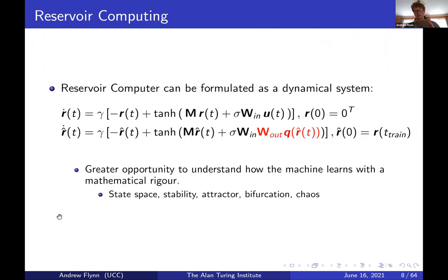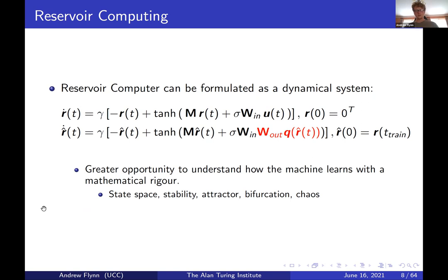The reservoir reconstructs the climate of the attractor — it follows long-term behavior with good short-term prediction and doesn't fly off to infinity. Importantly, the reservoir computer is also itself a dynamical system. That means we can use all our tools from dynamical systems theory — state space, stability, attractors, bifurcations, and chaos — to understand how learning takes place. This gives us a much greater opportunity to understand how the machine learns with mathematical rigor, which is a huge problem in machine learning. The reservoir computer is ideal for gaining a greater understanding of how the machine learns.